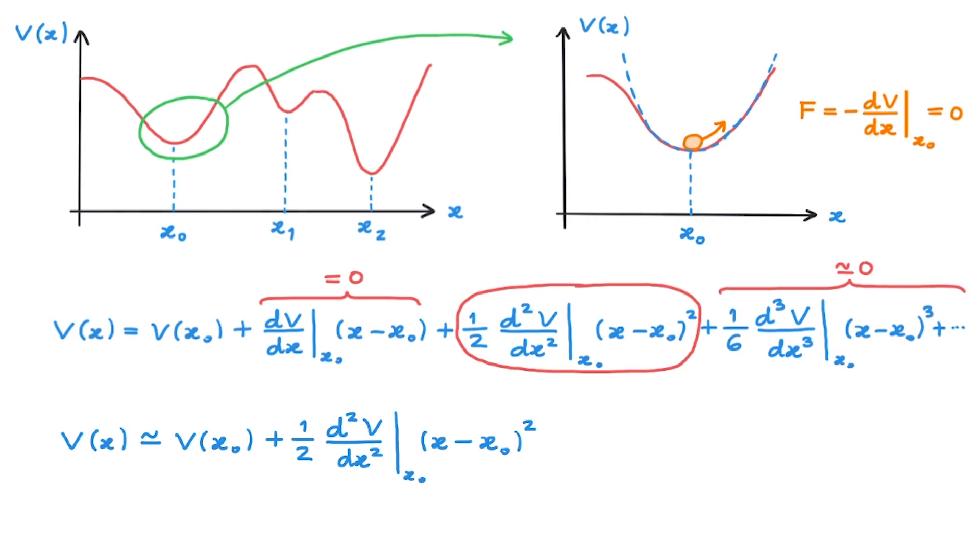This particular potential is slightly different to the canonical harmonic potential that we were discussing earlier because there is this constant term here and this position offset here. This is really just a detail. We can shift the origin of both axes to turn this expression into the canonical form.